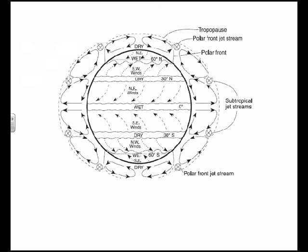Generally speaking, the equator tends to have lower pressure and 30 degrees north tends to have higher pressure. The wind doesn't go straight from high to low — it curves to the right — which means between zero degrees (the equator) and 30 degrees north, the general wind pattern is from the northeast toward the southwest. Where we live at about 43 degrees north, we're in the next zone, and winds generally move from the southwest toward the northeast. We'll investigate that in more detail in the future.